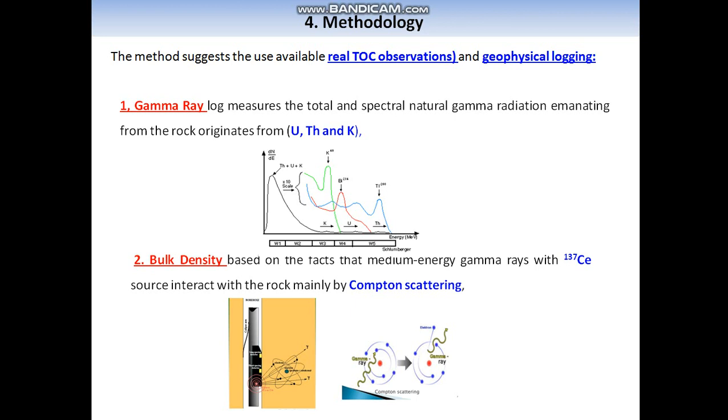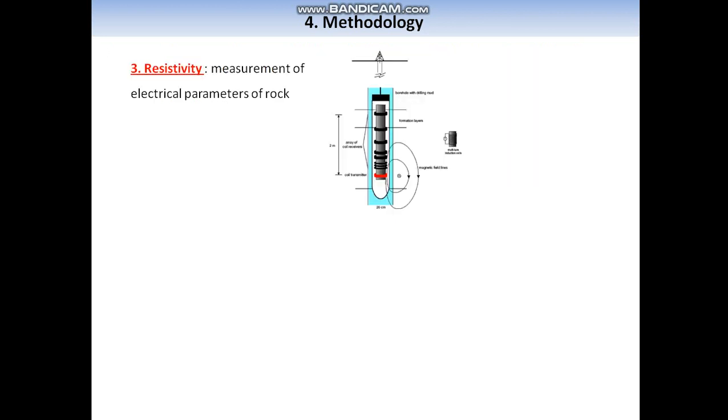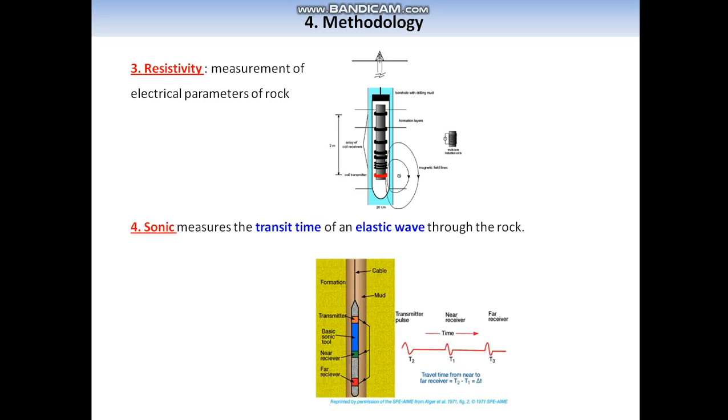The second is bulk density, based on the fact that medium-energy gamma rays with cesium source interact with the rock mainly by Compton scattering. Third is resistivity, measurement of electrical parameters of rock. Fourth is sonic, which measures the transit time of an elastic wave through the rock.